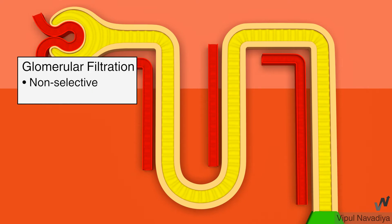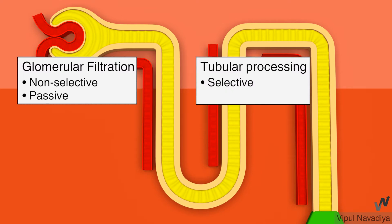As we already saw in the previous video, glomerular filtration is a relatively non-selective process as essentially all the solutes in plasma are filtered except plasma proteins. Moreover, it is a passive process. On the other hand, tubular processing is a highly selective process. Here, reabsorption or secretion of individual solute is very precisely controlled to regulate its final excretion. Hence, volume and composition of urine is finalized by tubular processing. Also, it is a highly energy-consuming process as it involves active transport of solutes across the renal tubule.